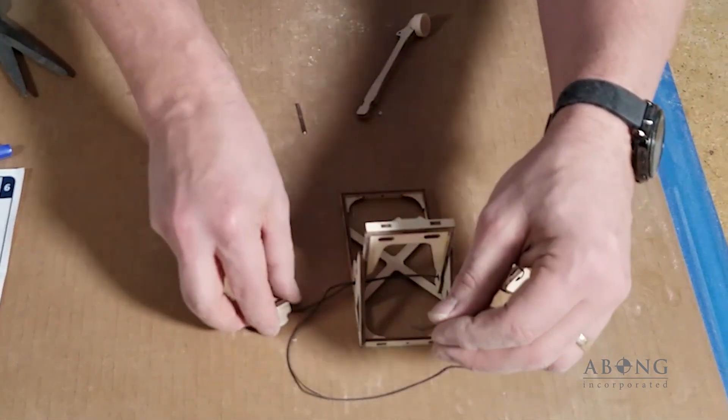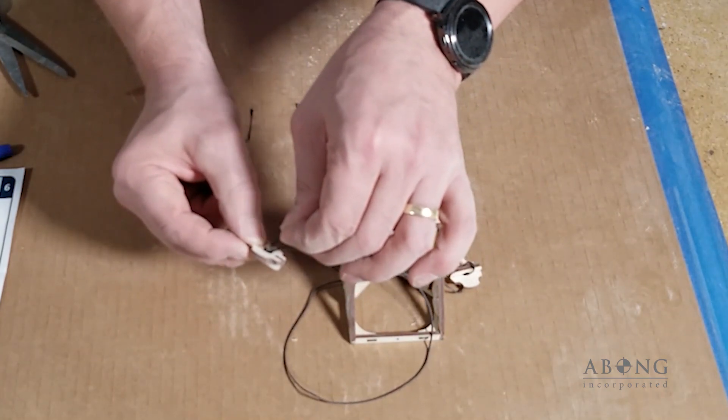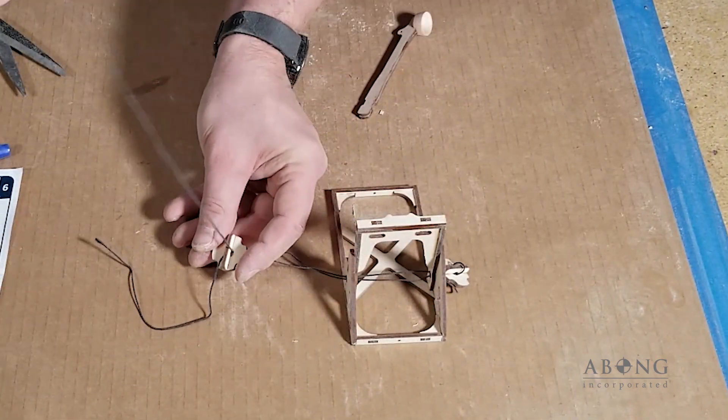So we're going to pass that up through the bottom of the winder plate on the other side of the bar to where we started. Like that. And now over the top.